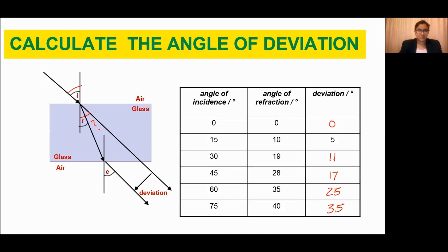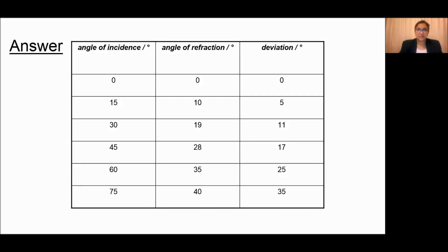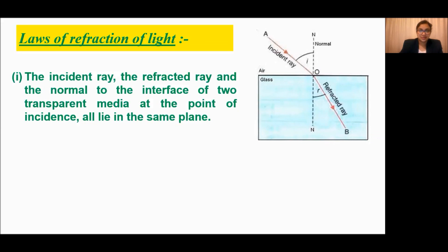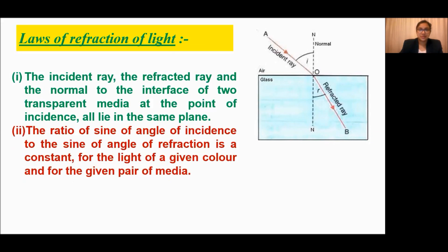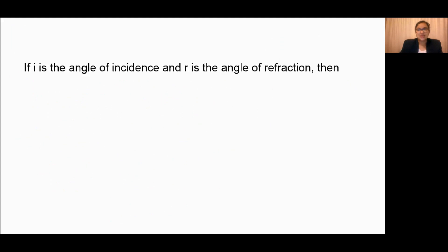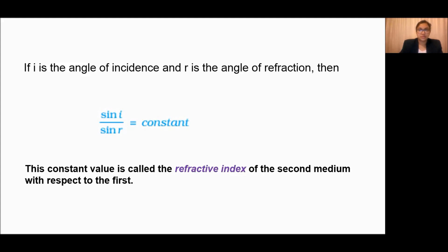Let us check the answer — yes, I think you got it right. Now, you are familiar with the refraction of light. Experiment shows that refraction of light occurs according to certain laws. The first law: the incident ray, the refracted ray, and the normal must lie in the same plane. The second law: the ratio of the sine of the angle of incidence to the sine of the angle of refraction is a constant. This is also known as Snell's law of refraction — that is, sine i divided by sine r equals a constant. This constant is called the refractive index of the second medium with respect to the first.